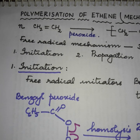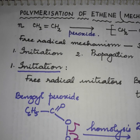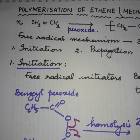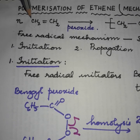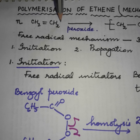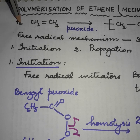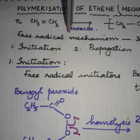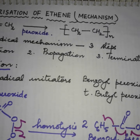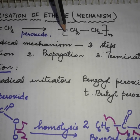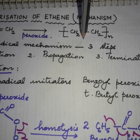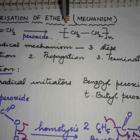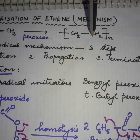Today's lecture is about polymerization of ethene and its mechanism. Ethene has the formula CH2=CH2. When N molecules of ethene polymerize in the presence of peroxide, we get the long chain polymer with the formula -CH2-CH2- repeated N times. The product formed is known as polyethene.